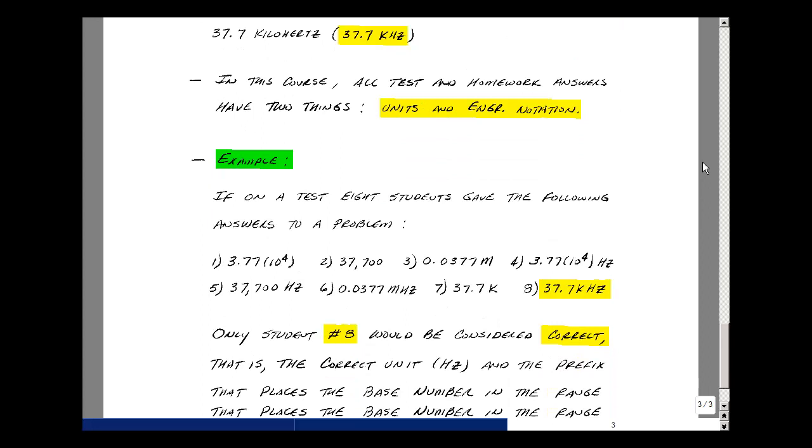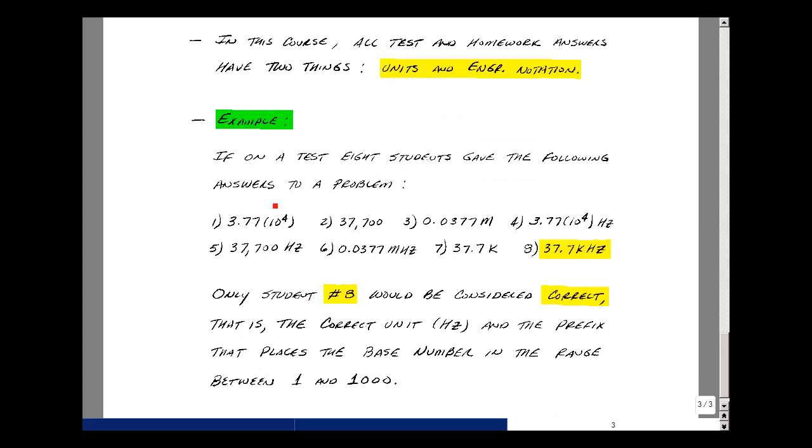Let me give you an example. Suppose on a test, eight students gave the following answer to a problem: 3.77 times 10 to the fourth, 37,700, 0.0377 meg, 3.77 times 10 to the fourth hertz, 37,700 hertz, 0.0377 megahertz, 37.7k, and 37.7k hertz. This last student actually had the correct answer. They have the number between one and a thousand, the appropriate prefix, and then the unit that goes with that.